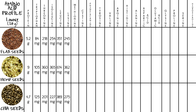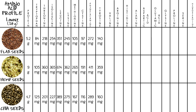For lysine: flax seeds 245 mg, hemp seeds 362 mg, chia seeds 275 mg. For methionine: flax seeds 105 mg, hemp seeds 265 mg, chia seeds 275 mg. For cysteine: flax seeds 97 mg, hemp seeds 191 mg, chia seeds 116 mg. For phenylalanine: flax seeds 272 mg, hemp seeds 411 mg, chia seeds 289 mg. For tyrosine: flax seeds 140 mg, hemp seeds 359 mg, chia seeds 160 mg. For valine: flax seeds 304 mg, hemp seeds 505 mg, chia seeds 270 mg.